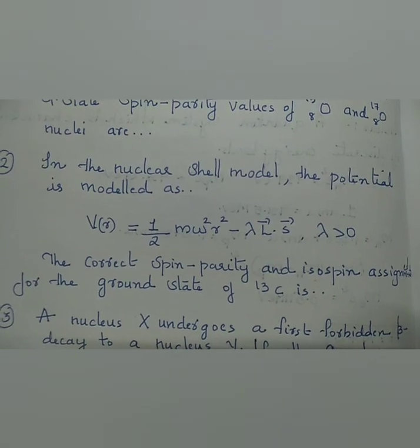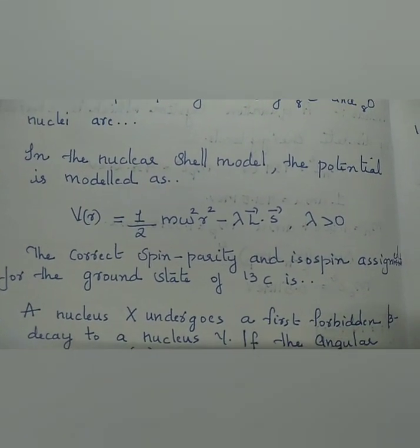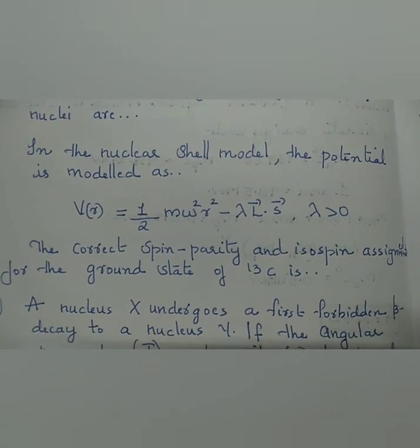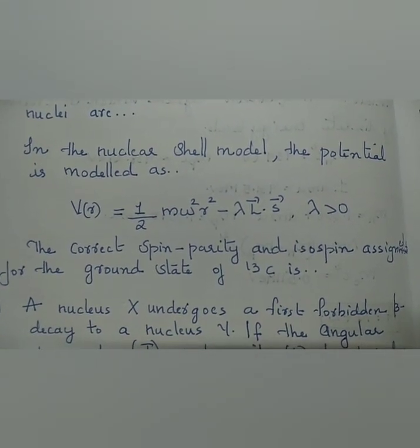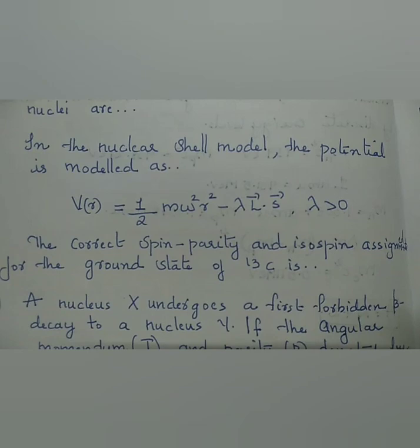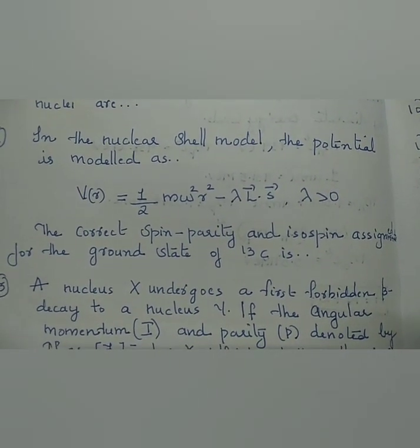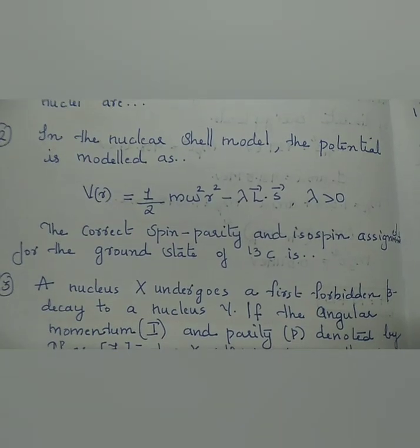Coming to the second question. In the nuclear shell model, the potential is modeled as V of R equals half M omega squared R squared minus lambda L dot S. The correct spin parity and isospin assignment for the ground state of Carbon-13 is.